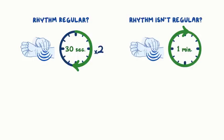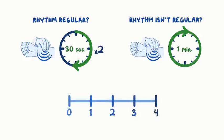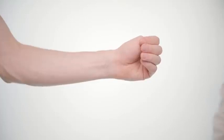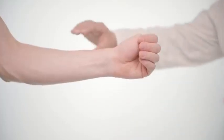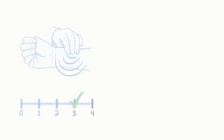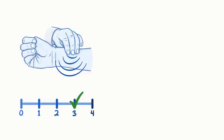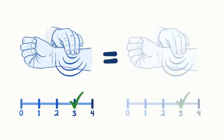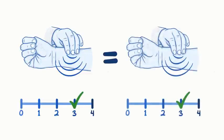While you count, assess the strength of Fred's pulse on a subjective scale of 0 to 4. Now check the other wrist to assess for symmetry. Both sides are equal on Fred, so both hands are receiving the same amount of blood flow.